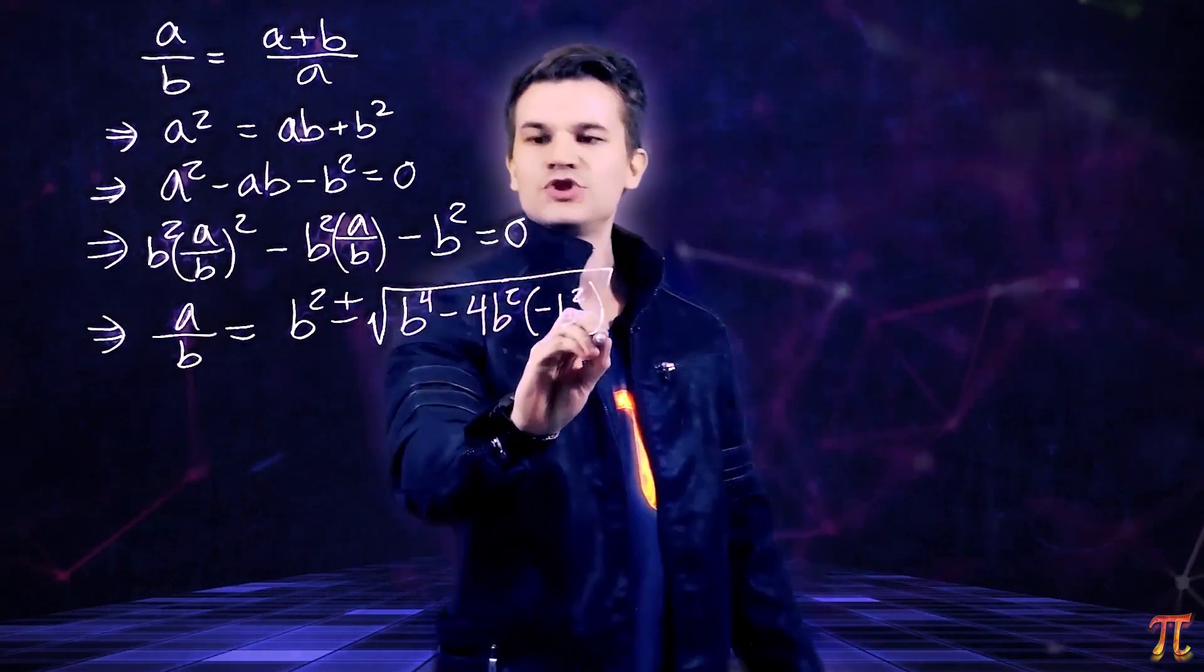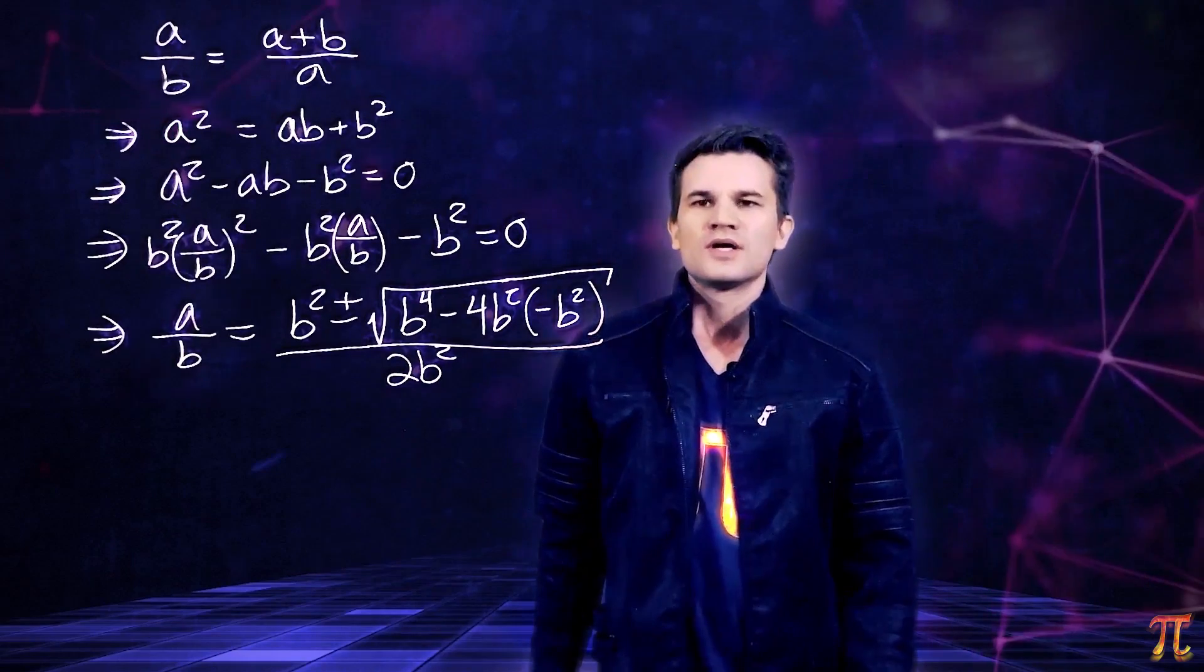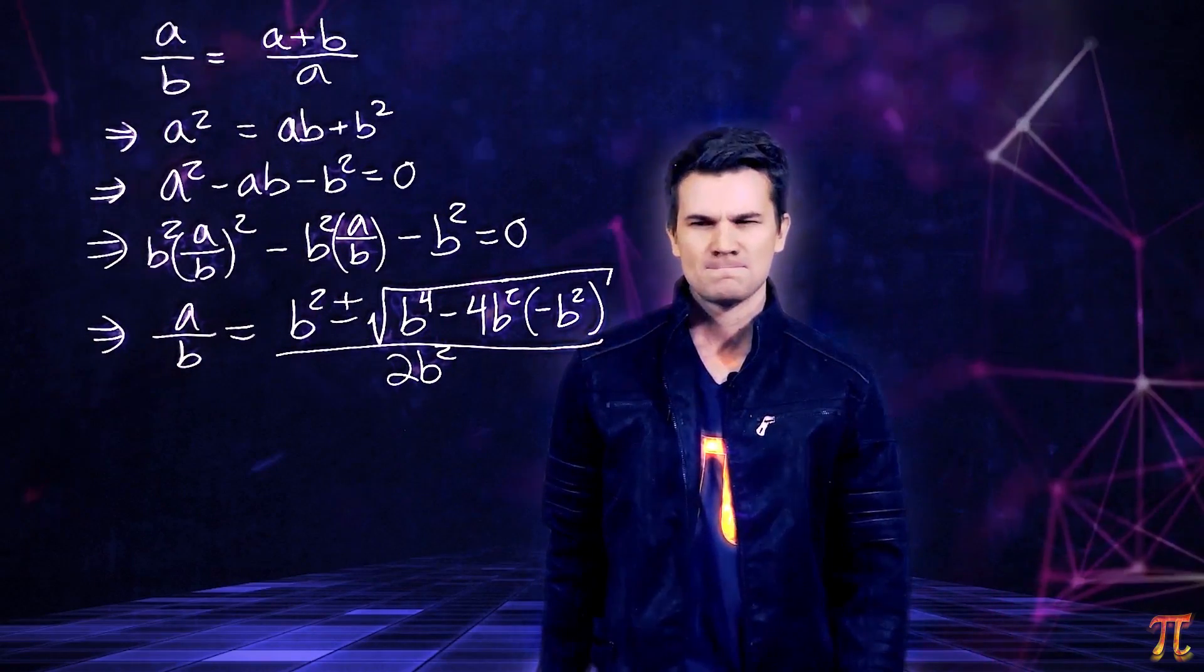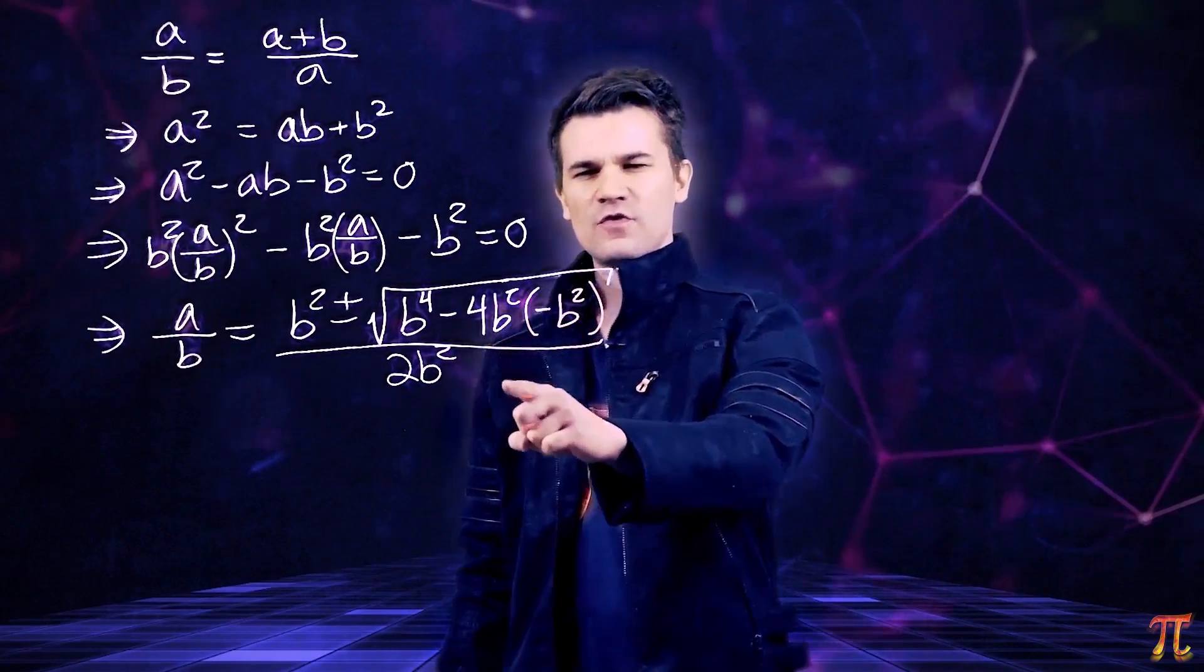So we could write this as b squared plus or minus the square root of b to the fourth plus four b to the fourth, which is five b to the fourth, over two b squared.